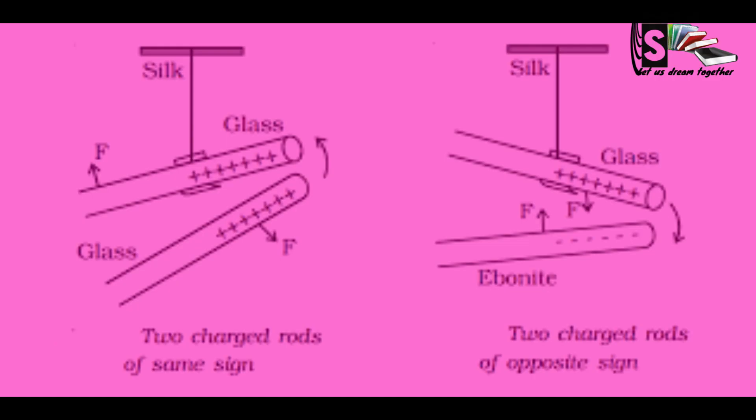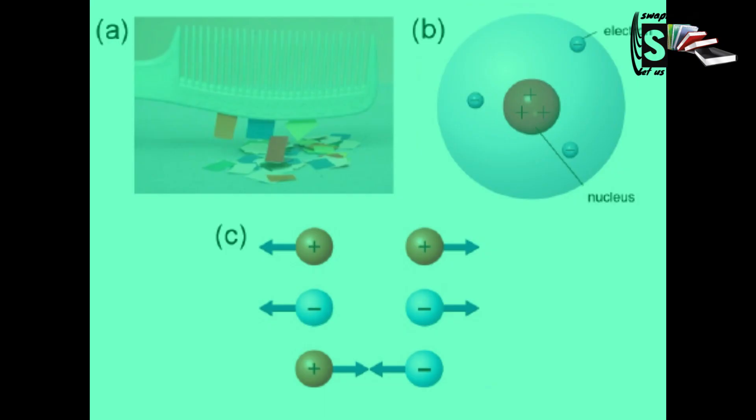The friction between certain materials makes the electrons move from the atoms of one material to the atoms of another material.